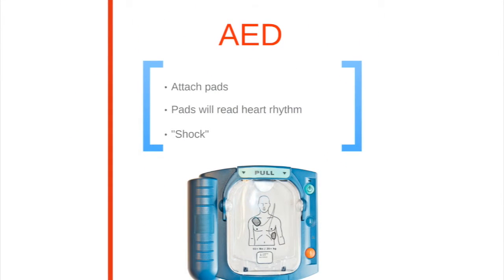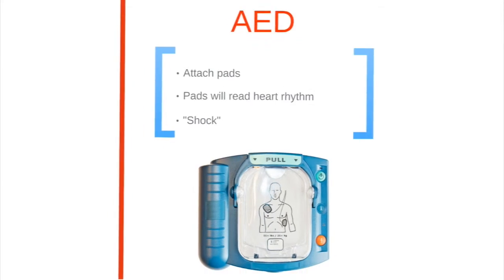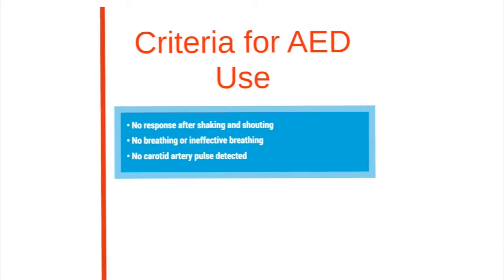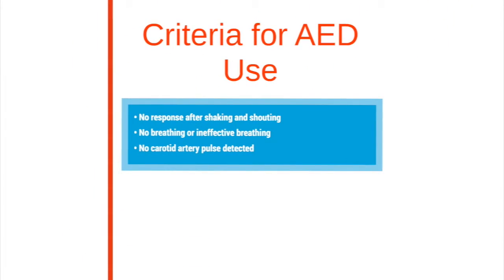To use an AED, attach the pads. The pads will read the heart rhythm and the AED will indicate whether a shock is needed. This resets the heart's abnormal electrical activity into a normal rhythm. You should use an AED when there is no response after shaking and shouting, no or ineffective breathing, or no carotid artery pulse detected.